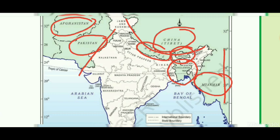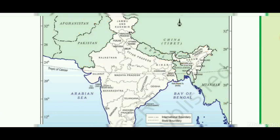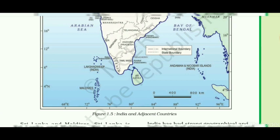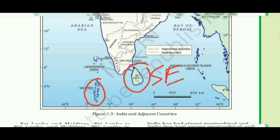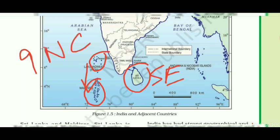So in this way there are total seven neighboring countries towards the land boundary of India. Towards the ocean side, there are two island countries: the first one is Sri Lanka and the second one is Maldives. Sri Lanka is situated to the southeast of India, while Maldives are located to the south of the Lakshadweep Islands. In total, India has nine neighboring countries.